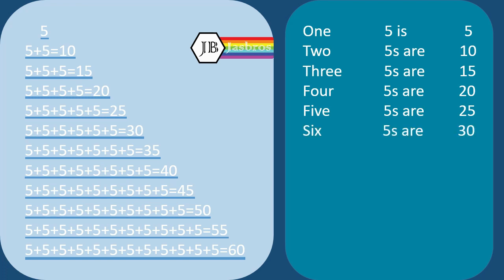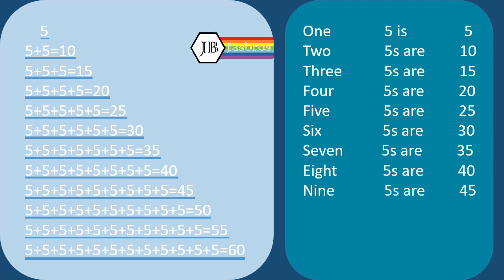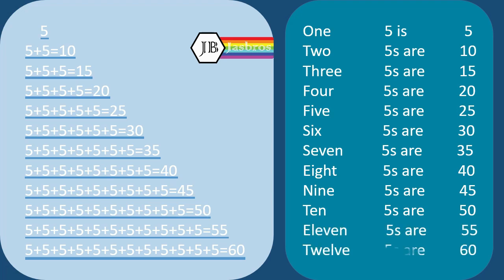Six fives are thirty. Seven fives are thirty-five. Eight fives are forty. Nine fives are forty-five. Ten fives are fifty. Eleven fives are fifty-five. Twelve fives are sixty.